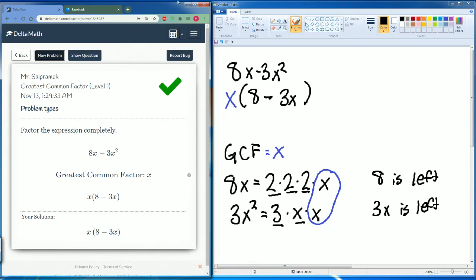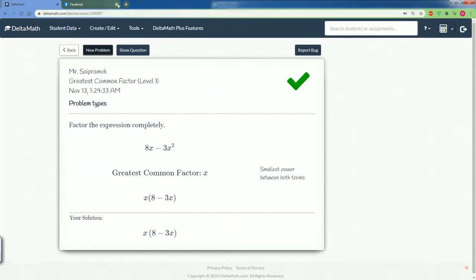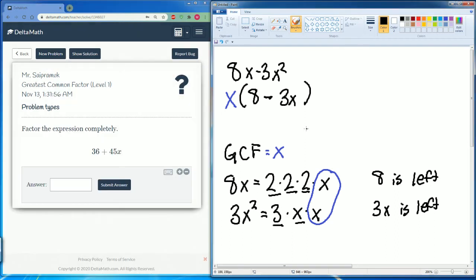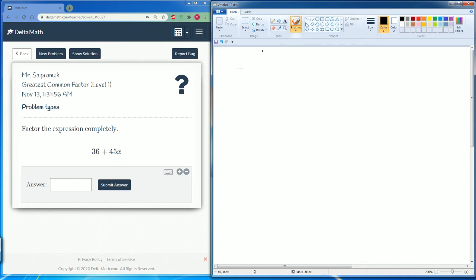Alright, good. Next, let's do the next new problem. We have this problem, same process. We are asked to factor out 36 plus 45x, so we have to find the greatest common factor.